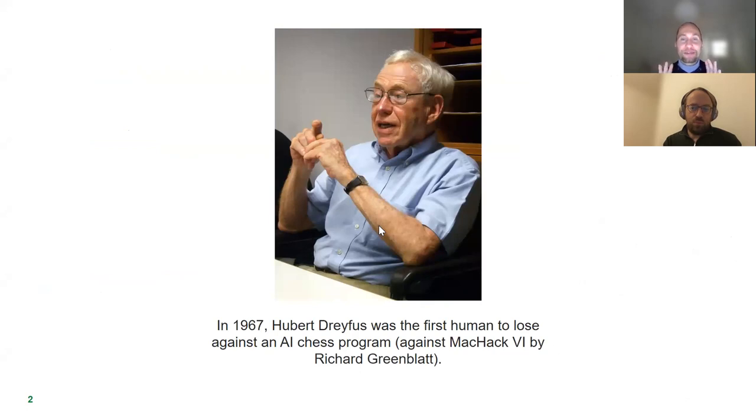You all know this guy here. This is Hubert Dreyfus. He has become world famous as the first person to lose against an AI chess program, although he wrote interesting books about the limits of AI. And in our last session, and here is the link to this session in YouTube, we discussed his approach of artificial neural networks and also the symbolic approach and very interesting relationships that he established to really important philosophers such as the late Wittgenstein and also Martin Heidegger.